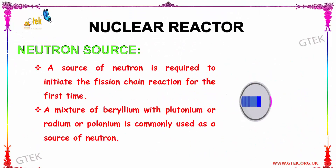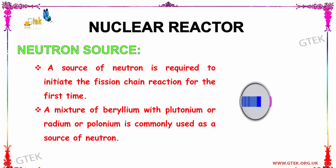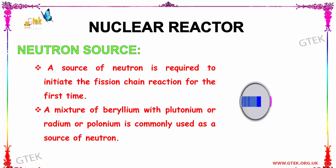Now let us see about the neutron source in a nuclear reactor. A source of neutrons is required to initiate the fission chain reaction for the first time. A mixture of beryllium with plutonium, radium, or polonium is commonly used as a neutron source.